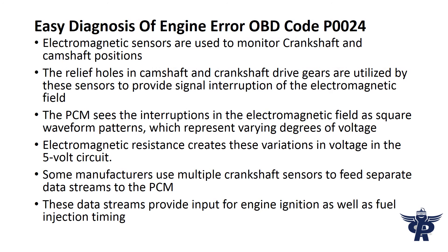Easy diagnosis of engine error OBD code P0024: electromagnetic sensors are used to monitor crankshaft and camshaft positions. The relief holes in camshaft and crankshaft drive gears are utilized by these sensors to provide signal interruption of the electromagnetic field.